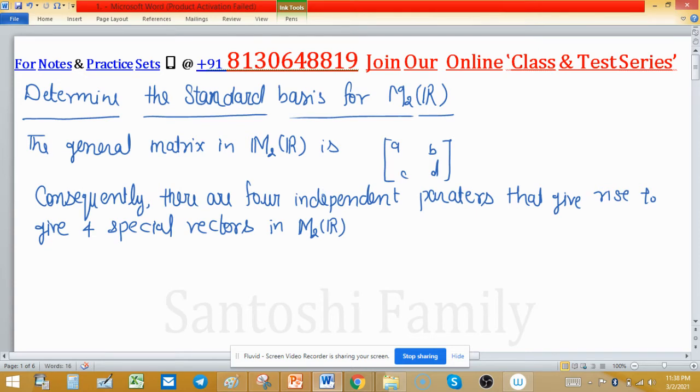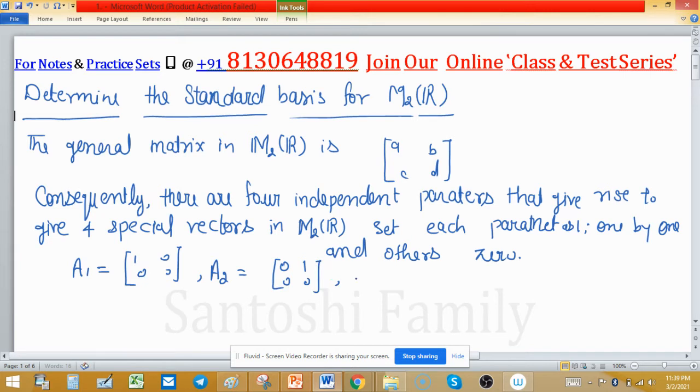Set each parameter to value 1 and the others to 0 to generate the following matrices: A₁ = [1,0;0,0], A₂ = [0,1;0,0], A₃ = [0,0;1,0], and A₄ = [0,0;0,1].